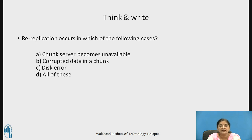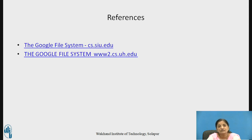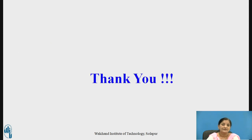Pause the video, think and write: Re-replication occurs in which of the following cases? Option A: when a chunk server becomes unavailable; Option B: when there is corrupted data in a chunk; Option C: when there is a disk error; Option D: all of these. As we have already seen, re-replication occurs in all three cases A, B, and C — so the correct answer is option D, all of these. These are some of the references used for preparing this session. Thank you.